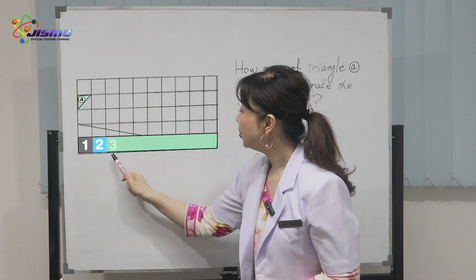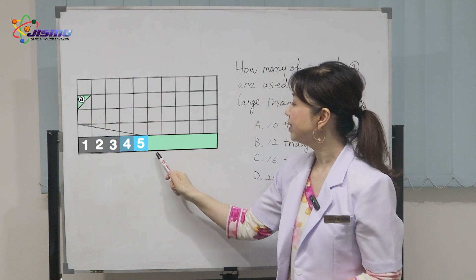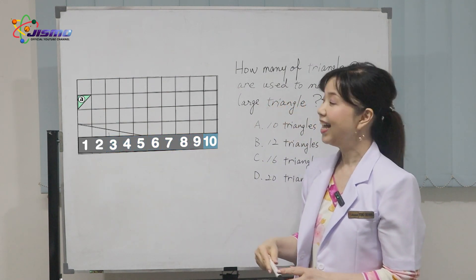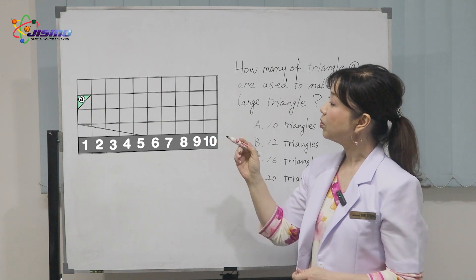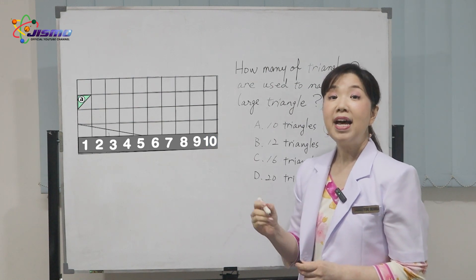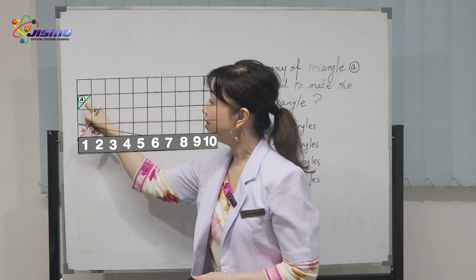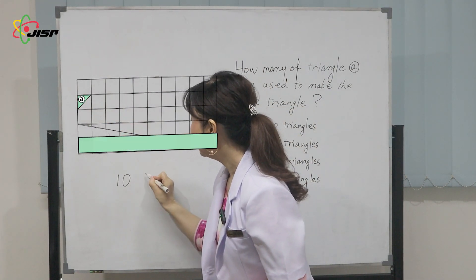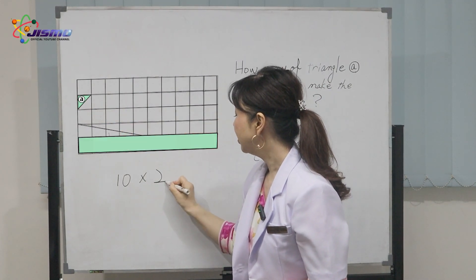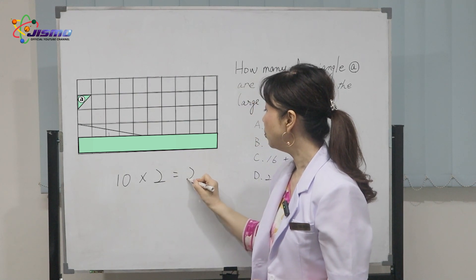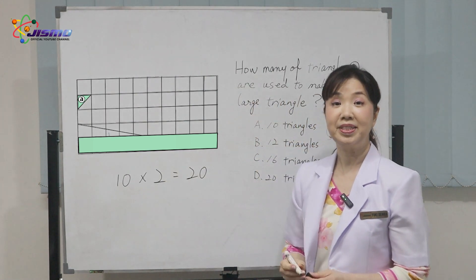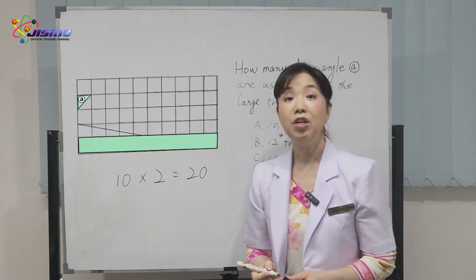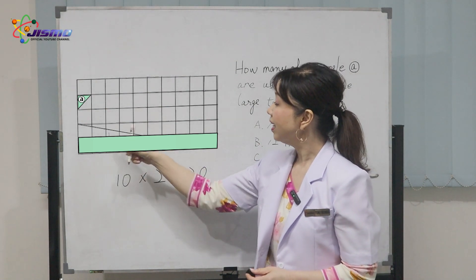1, 2, 3, 4, 5, 6, 7, 8, 9, 10. Each square is made of 2 triangles A, meaning 10 times 2 equals 20 triangles. We need 20 triangles to form the rectangle.